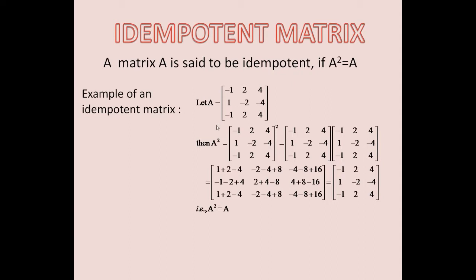Then A squared would be this matrix squared: minus 1, 2, 4, 1, minus 2, minus 4, minus 1, 2, 4, multiplied by minus 1, 2, 4, 1, minus 2, minus 4, minus 1, 2, 4.